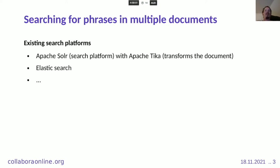You can search for phrases in multiple documents, and for this there already exist multiple search platforms and databases. The most popular one we used is Apache Solr, which also uses Apache Tika to transform documents into text. Apache Tika is a Java library that can open a document and transform it into HTML or plain text. Another very popular one is Elasticsearch, though I mainly focused on Apache Solr.